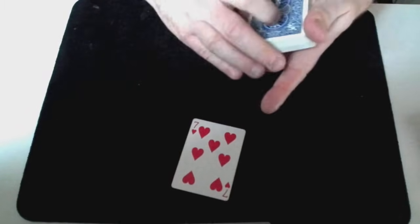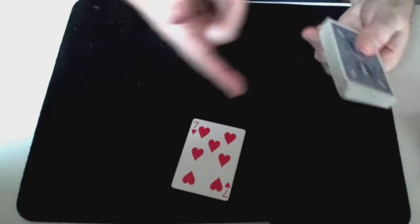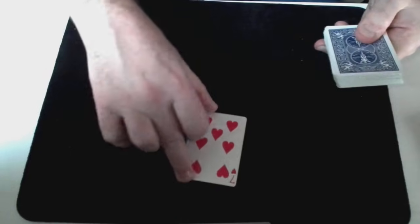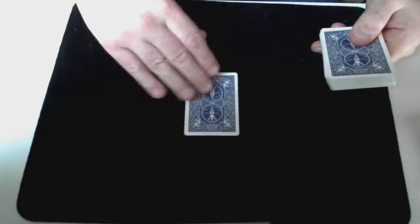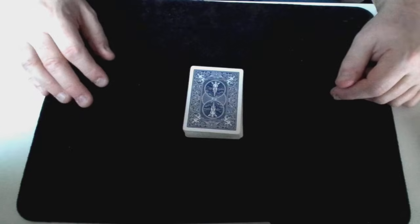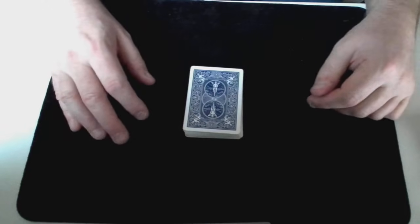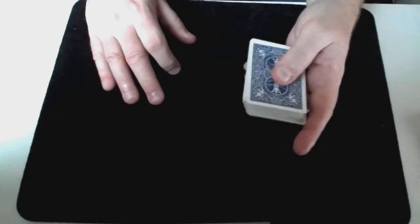Now ultimately we need to get that selected card to the bottom of the pack. There's lots of ways you can do this. But I find the easiest way is to simply have the card returned and the rest of the pack put on top. And then do some sort of false shuffles to give the impression that the cards are being mixed, where actually you retain that card at the bottom.